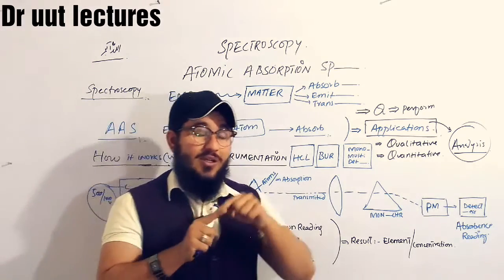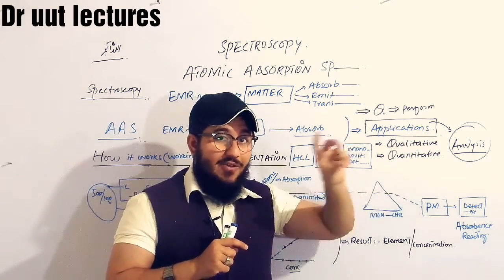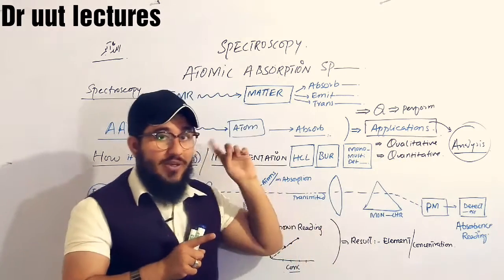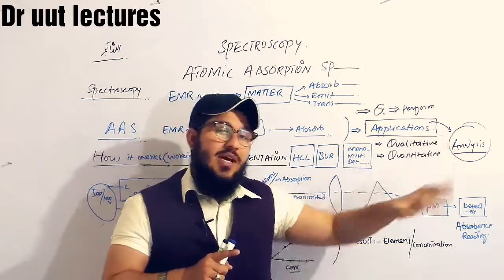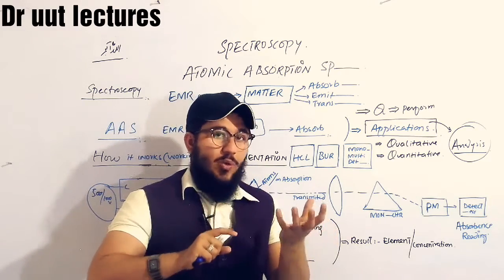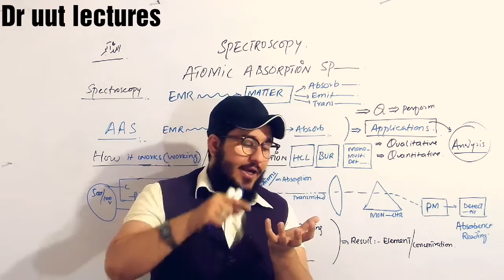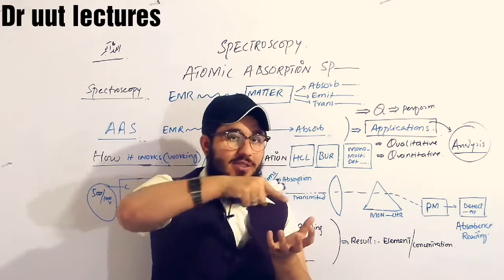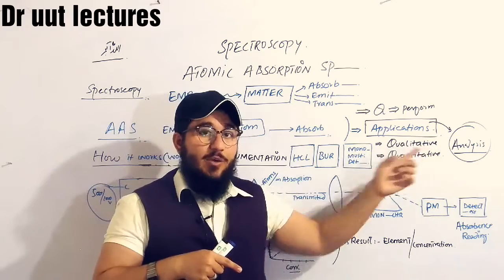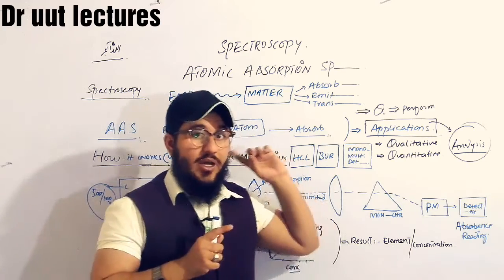There are two terms here: what kind of elements are present, and what concentration is present. We have two types of analysis — qualitative and quantitative. In the case of Atomic Absorption Spectroscopy, we can do both. What types of elements are present is the qualitative analysis, and what is the concentration of each element is the quantitative analysis. So we can do both types of analysis through AAS.